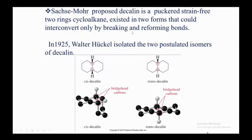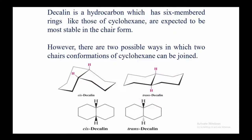In 1925, Walter Hückel isolated the two postulated isomers of decalin. In cis-decalin, you can see the bridgehead carbons; in trans-decalin, you can also see the bridgehead carbons clearly showing different conformations for both compounds. Decalin has six-membered rings like cyclohexane and is expected to be most stable in the chair form.